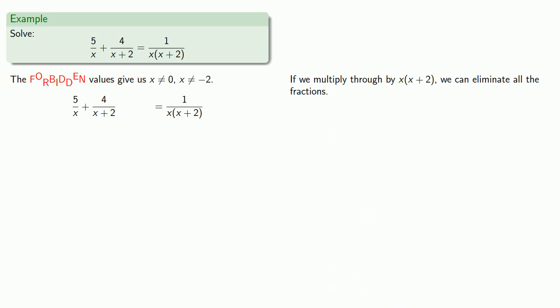So we'll multiply our first fraction by x times x plus 2, our second fraction by x times x plus 2, and the right-hand side, also times x times x plus 2. We'll remove the common factors. In the first product, x is a common factor, so that vanishes, and we're left with 5 times x plus 2. In the second product, x plus 2 is a common factor, so we'll remove it, and we'll have 4x left. And over on the right-hand side, x times x plus 2 is a common factor, so that vanishes, leaving us with 1.